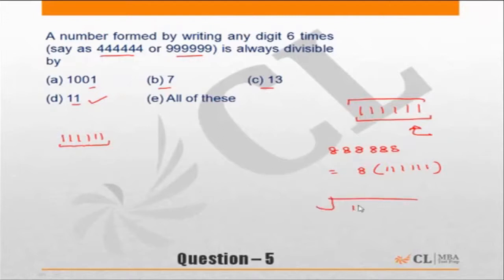You can always divide 111111 and check for 7. Okay, so 7 ones are 7. 41. 7 fives are 35. You are left with 61. 7 eights are 56. So we are left with 51 again.